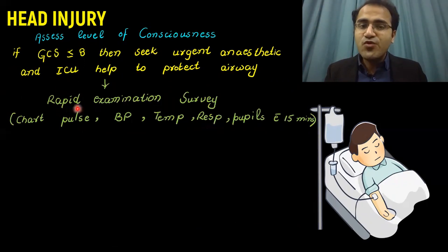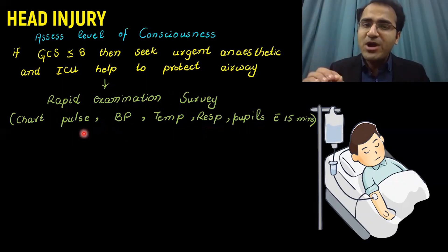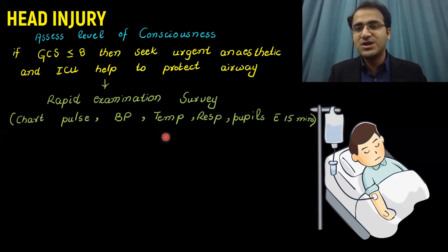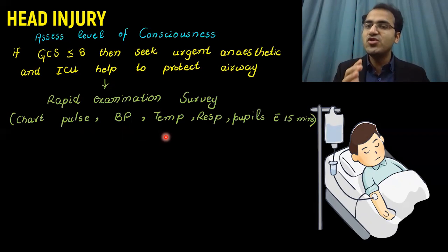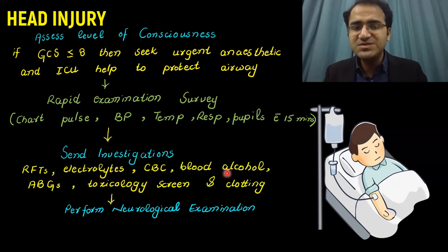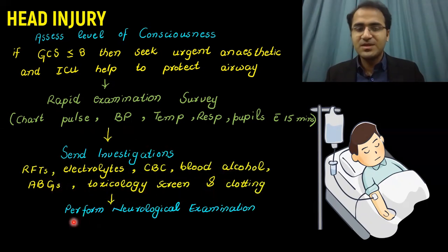Perform a rapid examination survey. Chart pulse, blood pressure, temperature, respiratory rate, and pupils every 15 minutes so that any deterioration can be spotted. Send investigations: RFTs, electrolytes, CBC, blood alcohol, ABGs, toxicology screen, clotting profile, and perform a neurological examination.